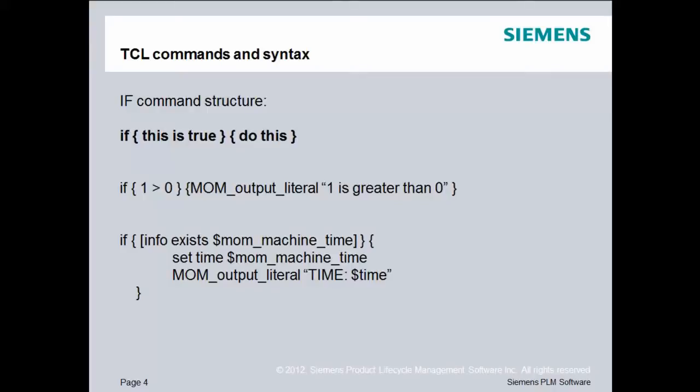The next example I have involves using an embedded command inside of the if statement. So we start out with if, and then inside of the if portion of the statement, we have these square braces, and then we're using a command called info. Remember the syntax for commands is the command name and then arguments. So this particular command says info exists, so the first argument is exists, so it's looking to see if this particular variable exists. So postbuilder checks to see if the variable mom_machine_time exists. Then if it does, it does two things: it sets the variable time to the value of mom_machine_time, and then it outputs the value of time. And then this closing brace closes off this opening brace over here.